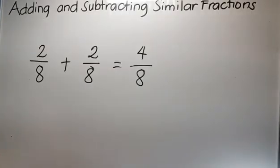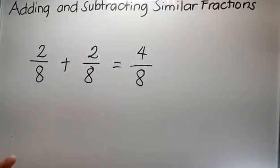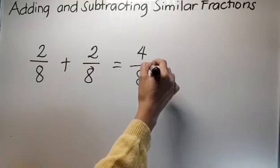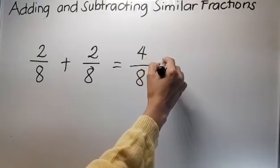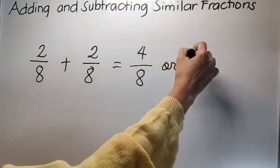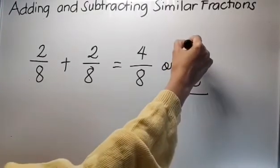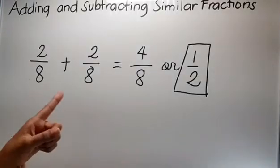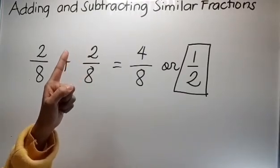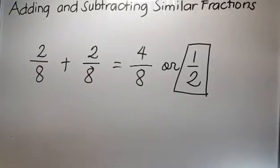So, kailangan mo pang hanapin ang kanyang GCF para makuha mo ang kanyang lowest term. Kung papanoorin mo yung video na yun, malalaman mo na ang sagot dito - tama rin to pero pag sinimplify mo siya, pag nasa lowest term na siya, yan ay 1 half. So, itong 1 half ay nasa lowest term na. Okay? So, ilalagay ko yung link ng changing fractions to lowest term para malaman nyo kung bakit naging 1 half yan.